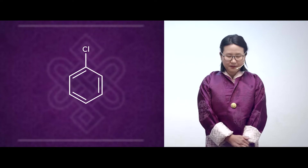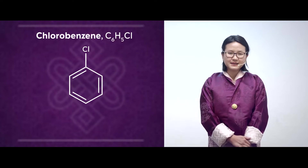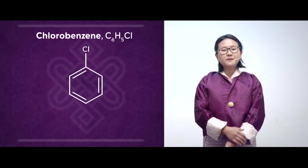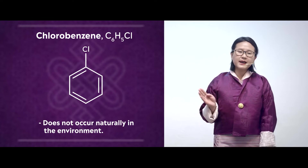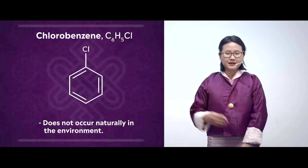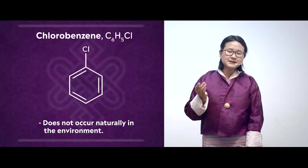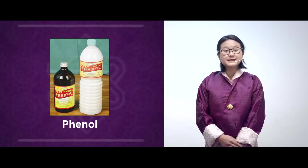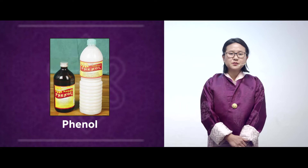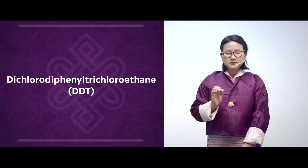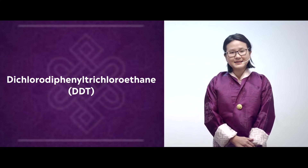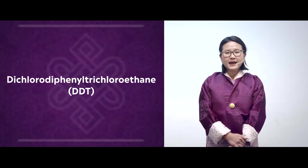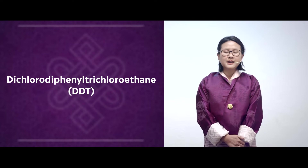This aromatic compound is known as chlorobenzene. This chlorobenzene doesn't occur naturally in the environment. In the past, chlorobenzene was used to produce phenol, which we also use today as a disinfectant, and it was also used to prepare dichlorodiphenyl trichloroethane, commonly known as DDT. It was used as a pesticide to combat malaria.